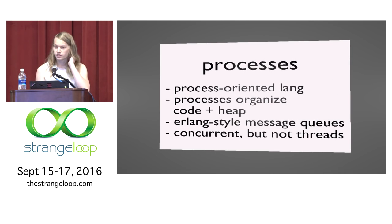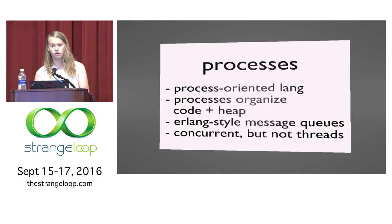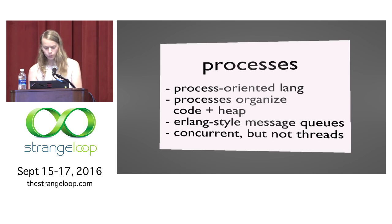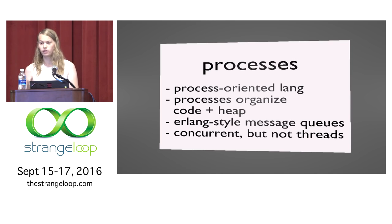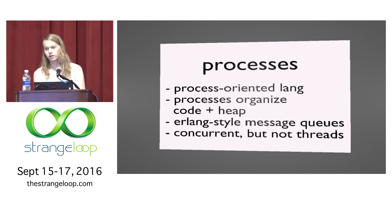Tulip is heavily process-oriented, though it isn't quite the same thing as Erlang. We use processes to organize code and all heap allocations — there's no representation of code that isn't contained within a process, and no memory is ever allocated outside of our process model. We use Erlang-style message queues with one caveat: when a message gets put into the queue, no buffer is ever allocated for it unless the process after it gets reactivated and cannot consume it. Processes are concurrent but not threads — they don't run completely parallel, we have no locking constructs, and our scheduler is smart enough to know when to not run some processes.